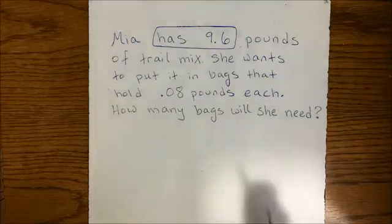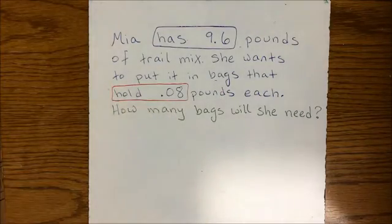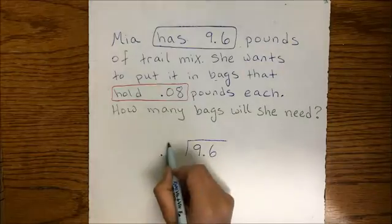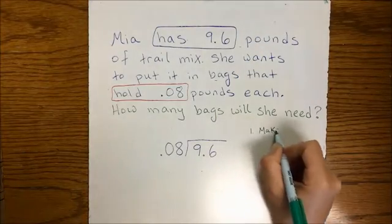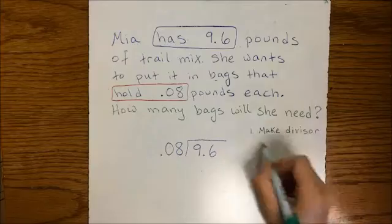So 9.6 is the total amount and each bag holds 0.08. So our problem setup will look like this. Step 1 is we need to make the divisor a whole number.